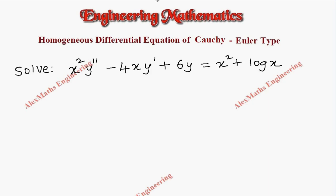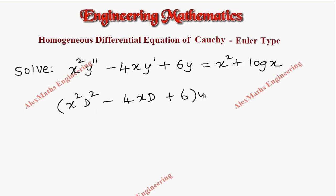Hi students, this is Alex. In this video we are going to solve a problem based on a homogeneous differential equation of Euler's type, also known as the Cauchy-Euler type. Let's rewrite the equation: x² d² minus 4x d plus 6, whole bracket, into y equals x² plus log x. This is of the form with variable coefficients.